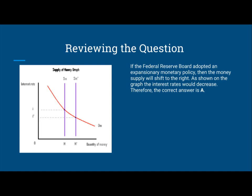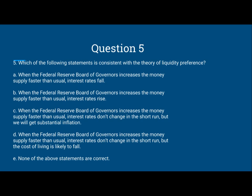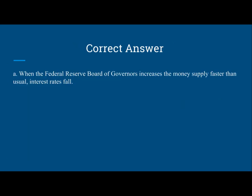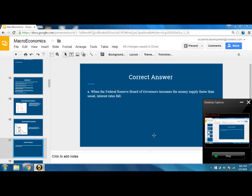Therefore, the correct answer is A — when the Federal Reserve Board of Governors increases the money supply faster than usual, interest rates will fall. Interest rates will fall, not rise. And conversely, if the Federal Reserve Board adopted a contractionary monetary policy, then the money supply will shift to the left, thus increasing the interest rates for businesses or any party that wants to borrow money. So A is the correct answer. For more information, please go to the groundwork. Thank you.